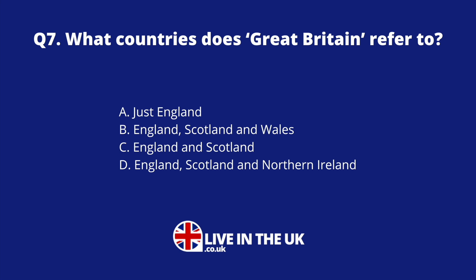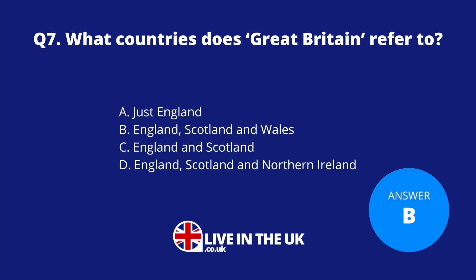Question seven: Which countries does Great Britain refer to? Just England? England, Scotland and Wales? England and Scotland? Or England, Scotland and Northern Ireland? The answer is B — England, Scotland and Wales. Northern Ireland is not included in what we call Great Britain. But the UK as a whole does of course include Northern Ireland.